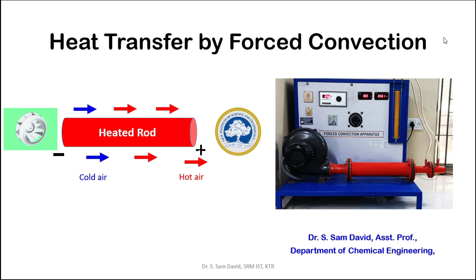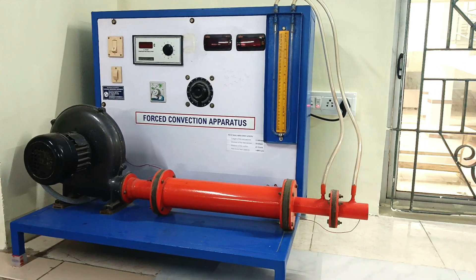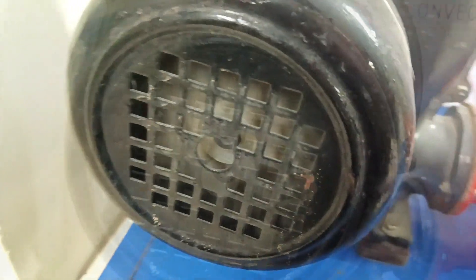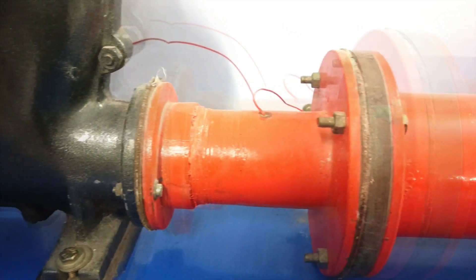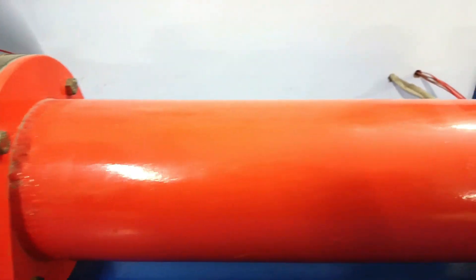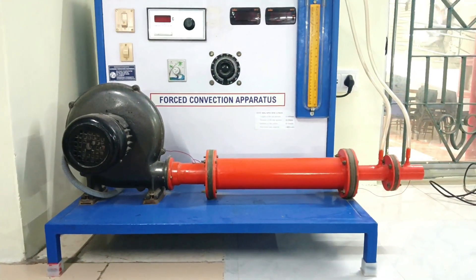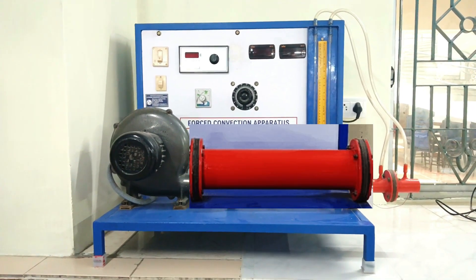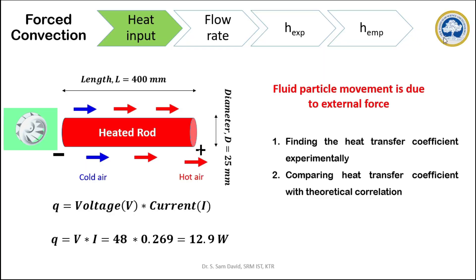In this particular experiment we are going to practice how convective heat transfer takes place and calculate the corresponding heat transfer coefficients. You are seeing the forced convection heat transfer apparatus. This blower takes the air from the surroundings and sends it through this orange pipe. Within this pipe a metal rod is fixed which will be heated by applying a potential across it. The potential applied across the heater rod is the heat input for this system, which can be calculated by the product of voltage and current. The main objective of this experiment is to calculate the heat transfer coefficient experimentally and compare it with the empirical heat transfer coefficient.